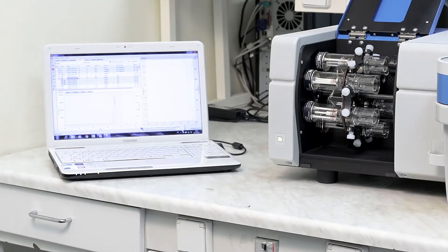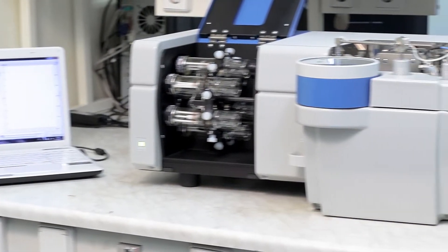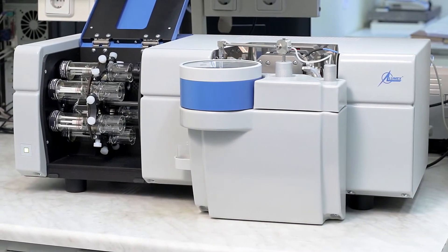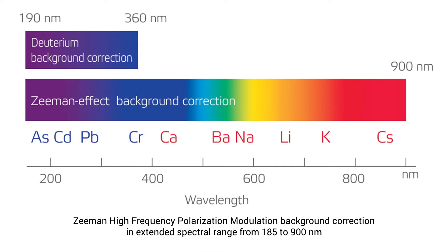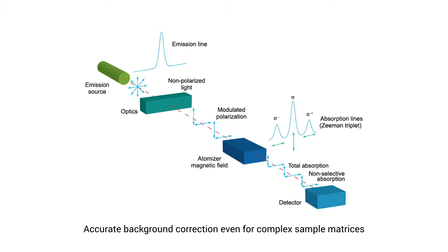Next, we will show you some of the main features of MGA-1000. The Zeeman High Frequency Polarization Modulation enables background correction in whole spectral range from 185 to 900 nanometers. This technology is responsible for simultaneous measurement of total and background absorptions.